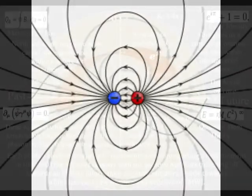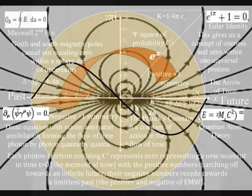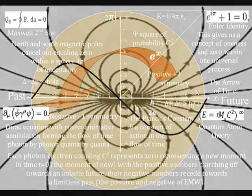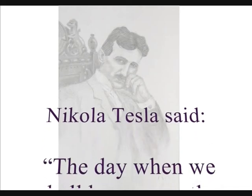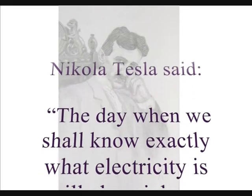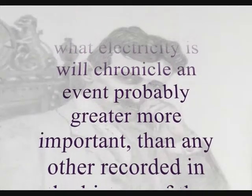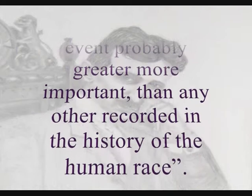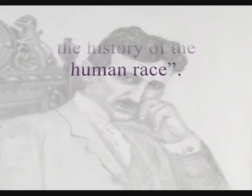Because the photon of quantum mechanics is also the courier that forms the movement of electromagnetic fields, this also gives us an objective understanding of why we can create electricity. Nikola Tesla said, the day when we shall know exactly what electricity is will chronicle an event probably greater, more important, than any other recorded in the history of the human race.